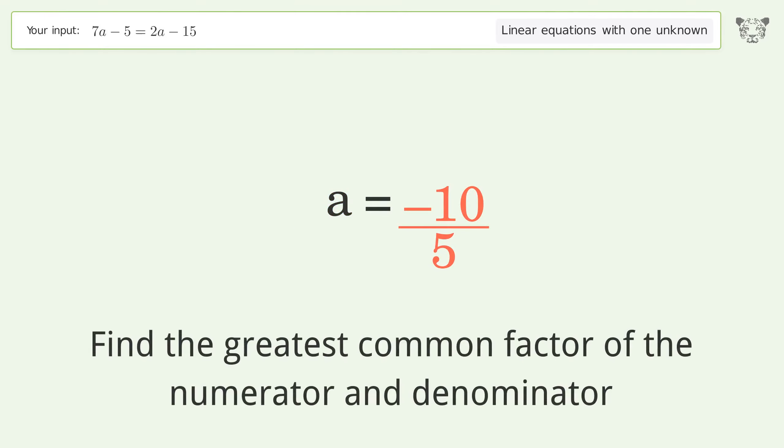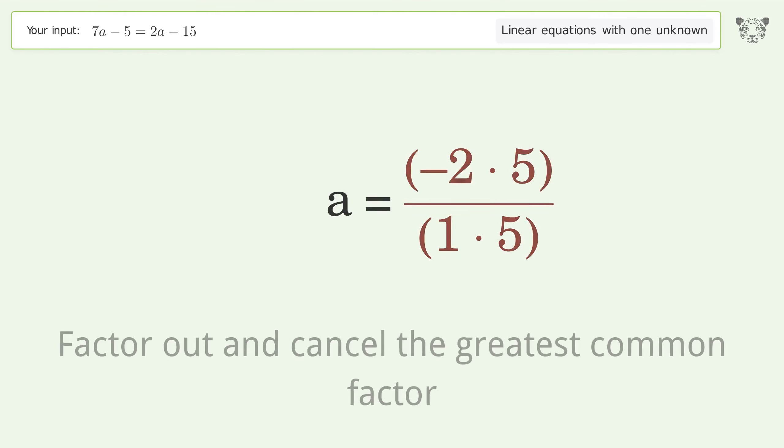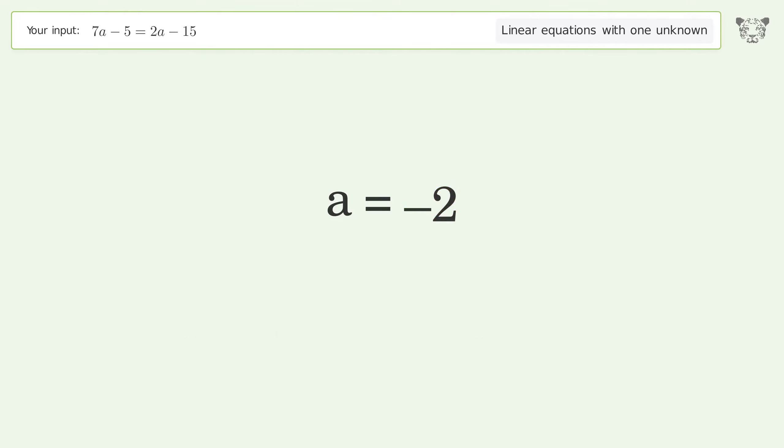Find the greatest common factor of the numerator and denominator. Factor out and cancel the greatest common factor. And so the final result is A equals negative 2.